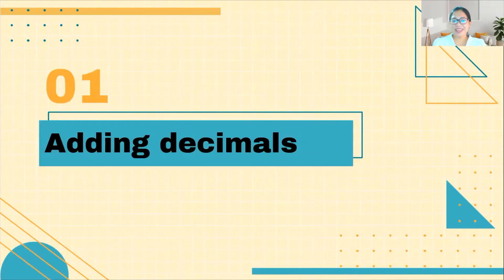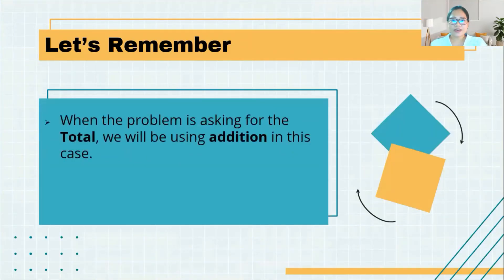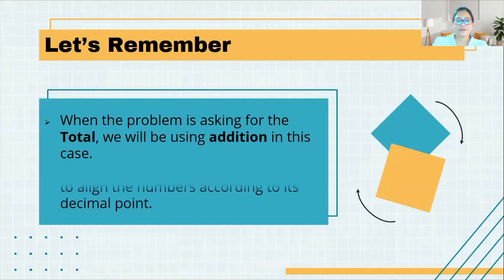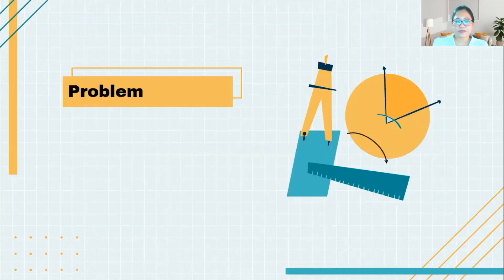Now that we already know how to read decimal numbers, let's move on to lesson number 2, which is adding decimals. I will give you two word problems to answer today. Before we start, let's remember some important notes. When a problem asks for the total, we will be using addition. Remember: if you see the word 'total,' that means you are going to add. When adding decimal numbers, we need to align the numbers according to their decimal point — it should be straight and aligned, otherwise we will not get the correct answer.